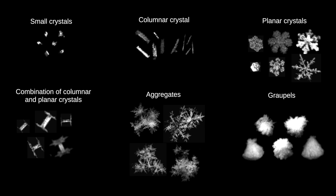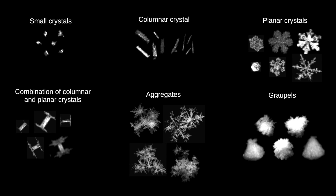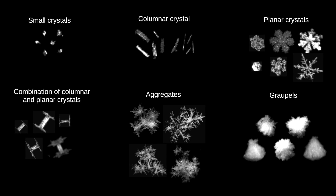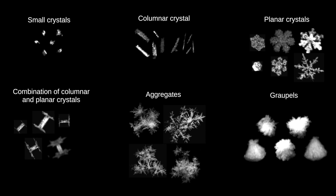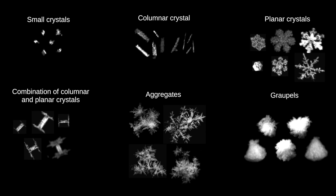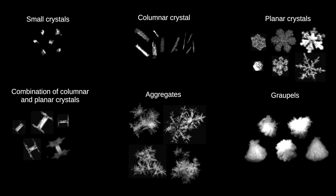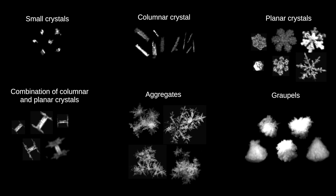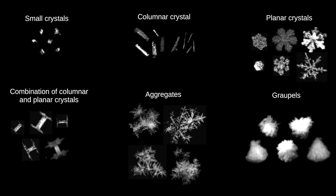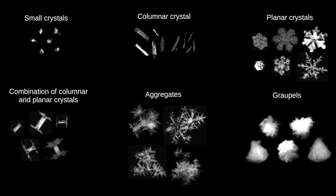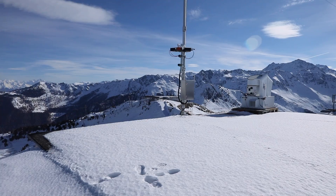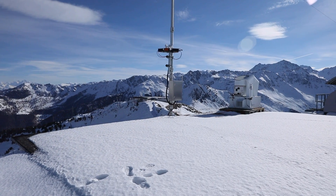You have the nice little neat crystals, you have aggregates where several crystals stick together, and you have also the famous dendrite — the picture that everyone has in mind when talking about snowflakes — which actually turns out to be not the most frequent type of snowflake falling.